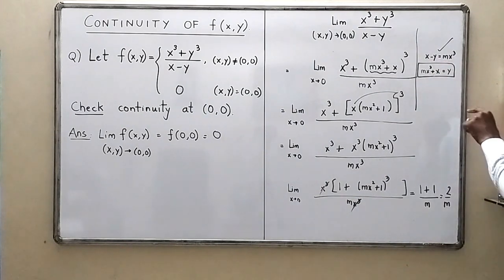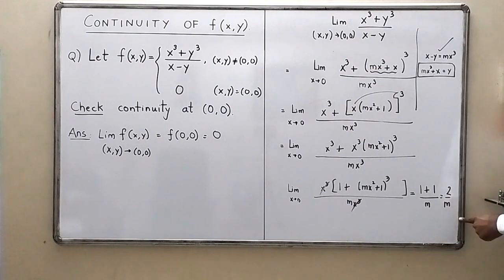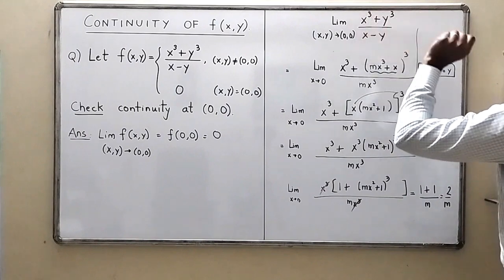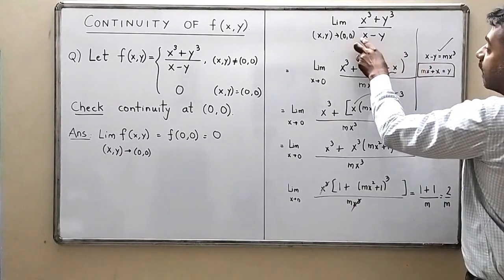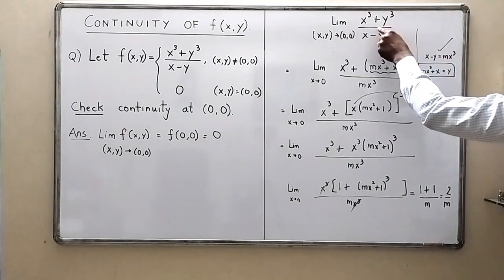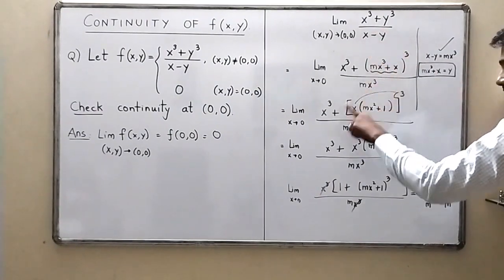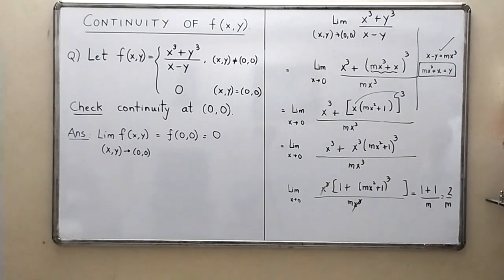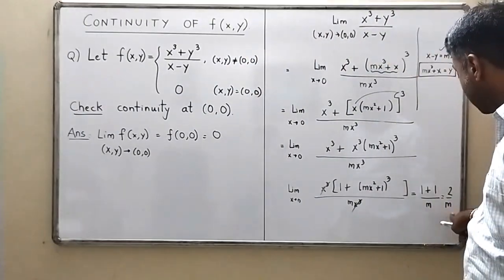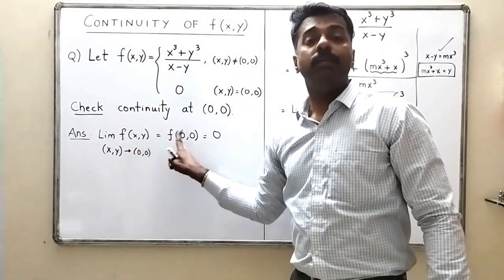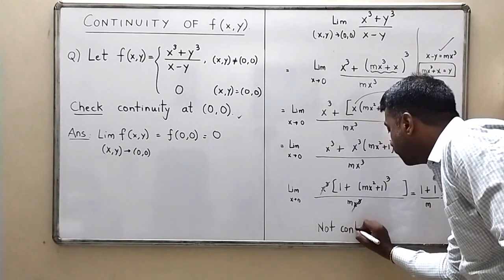When we use the path x−y = mx³ (equivalently y = x − mx³), the limit becomes 2/m, which depends on m. Therefore the limit as (x,y)→(0,0) does not exist, since different paths give different values. Because the limit does not exist, it cannot equal the value of the function, and therefore this function is not continuous at (0,0).